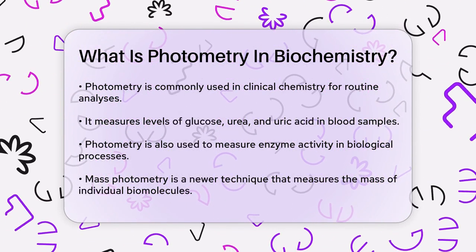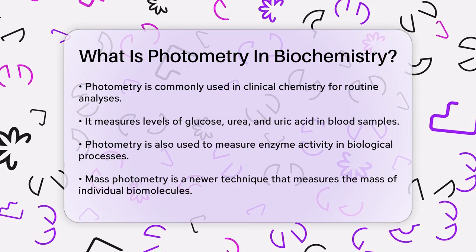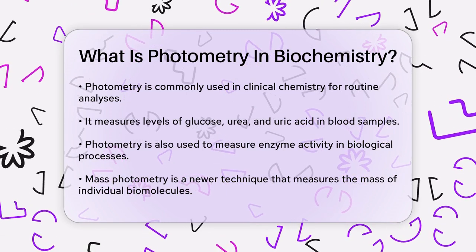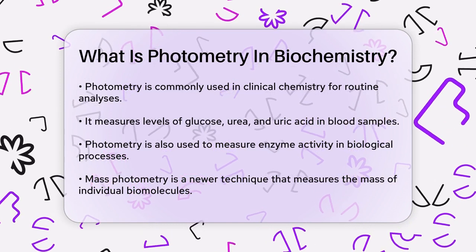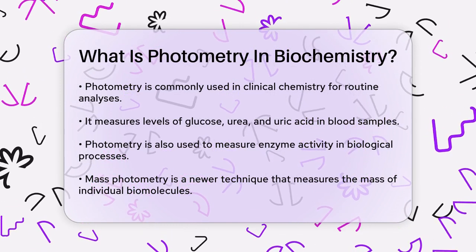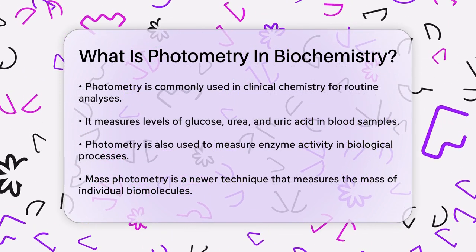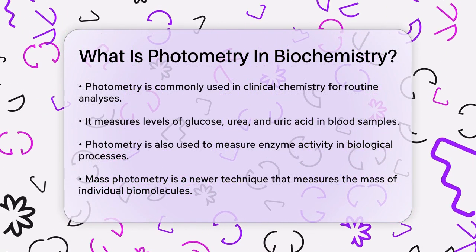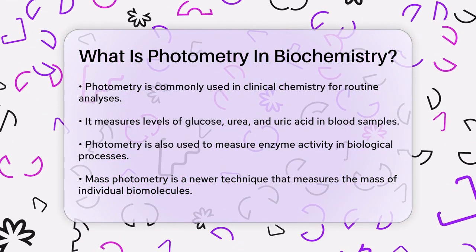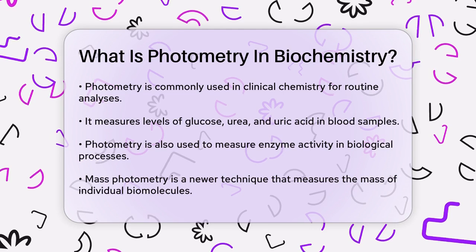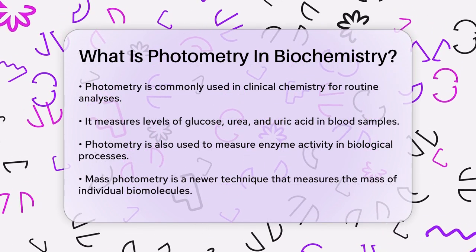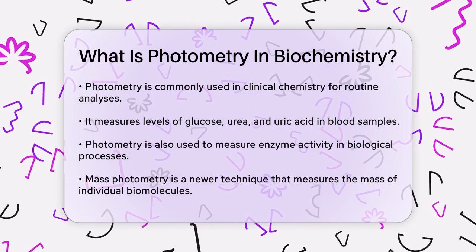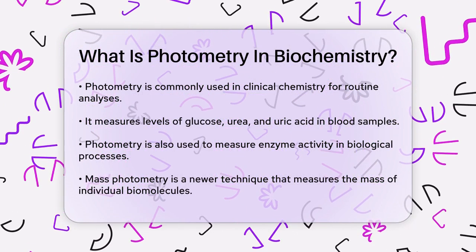Another application of photometry is in the study of biomolecules. While traditional photometry measures light absorption, a newer technique called mass photometry measures the mass of individual biomolecules by detecting the light scattered by these molecules. This method is particularly useful for studying proteins, nucleic acids, and other biomolecules in their native state without the need for ionization or fragmentation.